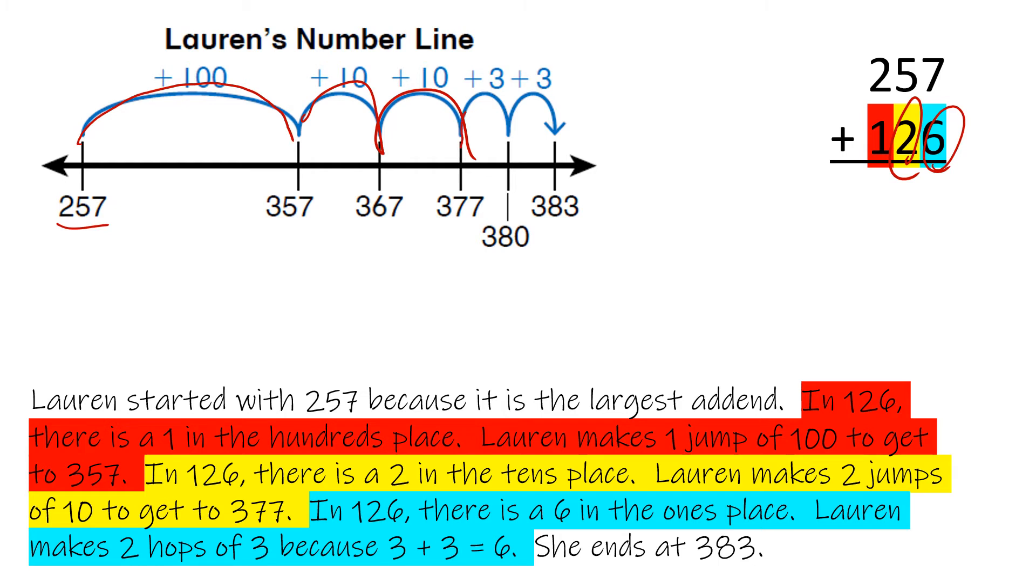Lauren makes two hops of 3 because 3 plus 3 equals 6. So 377 plus 3 is 380. That makes the number easy to solve. And then add the other 3 to get to 383. She ends at 383. That is Lauren's way of solving it.